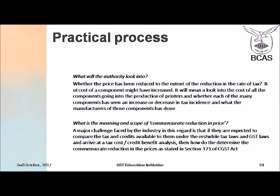Those aspects will also have to be looked at, but will the authority look at them? That is the question. Another question which arises is that the provisions say a commensurate reduction in price will have to be made in order to pass on the benefit of any reduction in the rate or benefit of input tax credit. The major challenge faced by the industry is: what do you mean by commensurate reduction in price? How do you arrive at it? What will fall within its ambit? While the authority has laid down the procedure and come out with a variety of powers, it has not clearly spelt out what you have to look at or how you will determine what is the commensurate reduction in price.